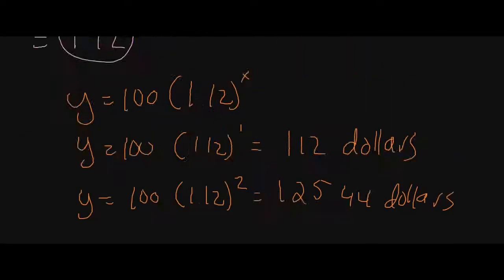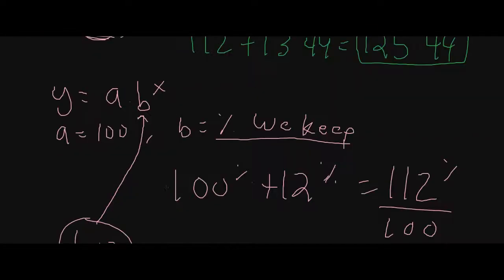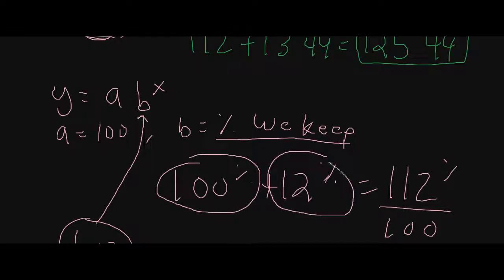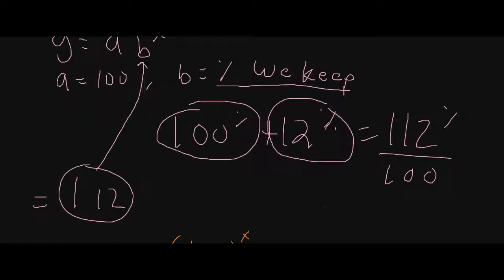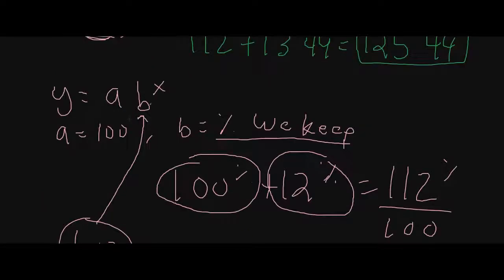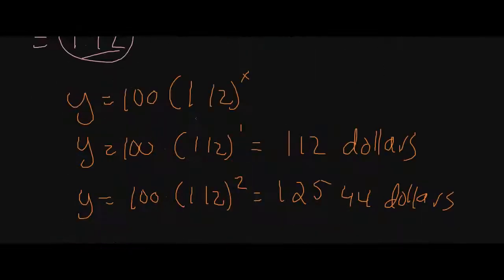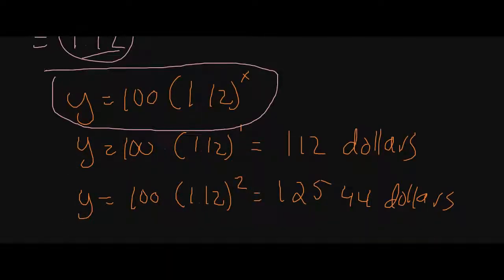When you're dealing with percent increase problems, you're taking 100% of its value plus 12% of the value you keep. That gives you your constant multiplier divided by 100, and then you put it into your equation with the starting value. Hopefully this helps to clear that up.